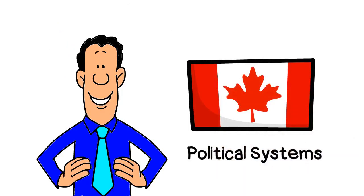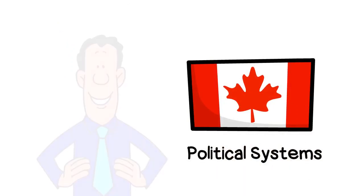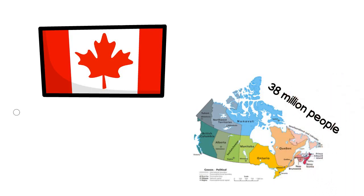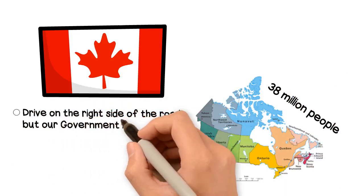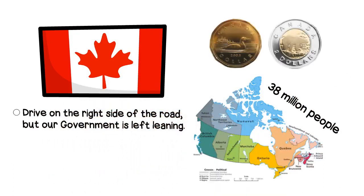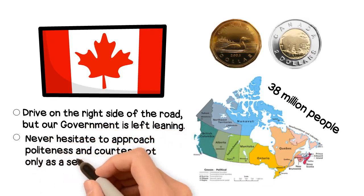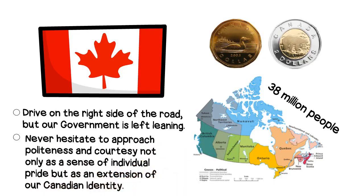Understanding Canada's Political Systems by Jared Camp. First, a little information on Canada and the land that we all stand on. Canada is a country spread across 10 provinces and three territories. Canada's constitution was born almost 160 years ago. Our population is approximately 38 million people. We drive on the right side of the road but our government is left-leaning. We use the terms loony and toony not to signify body parts but physical forms of currency. We never hesitate to approach politeness and courtesy not only as a sense of individual pride but as an extension of our Canadian identity.